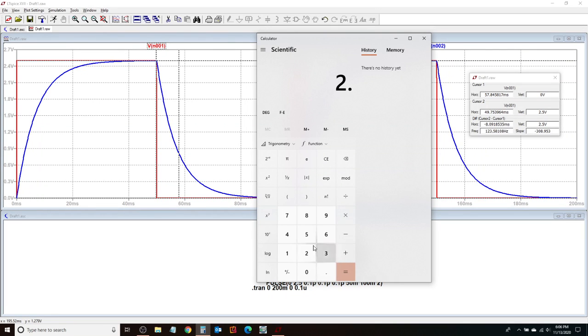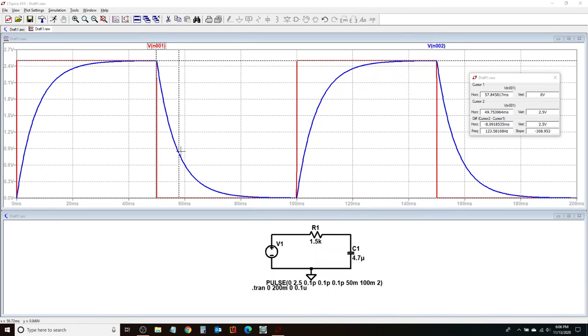And I'm going to quickly use my calculator here to tell me what is 36.8% of 2.5 volts, which is simply 2.5 divided by E. So that is 0.9197. So at 0.9197 volts, I would pick that to be my second marker, first marker point.